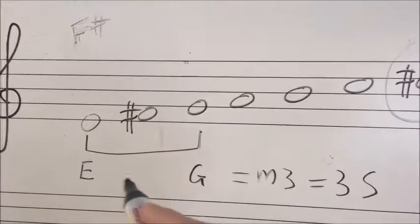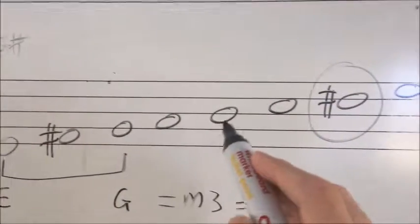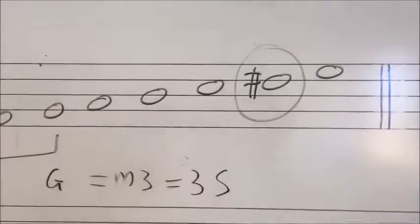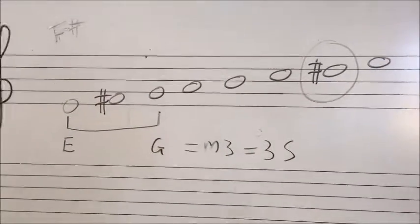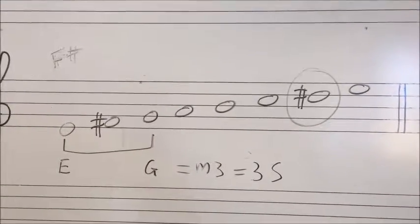So a minor sounding scale with the one, two, three, four, five, six, seventh note, a semitone higher than what we were expecting. If you know your scale structures, you'll know that this is a harmonic minor scale.